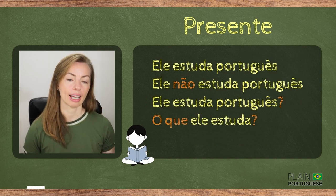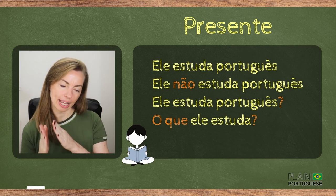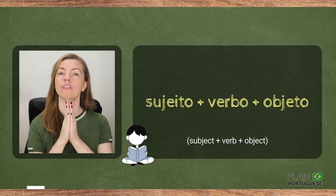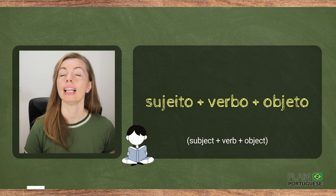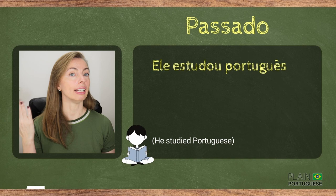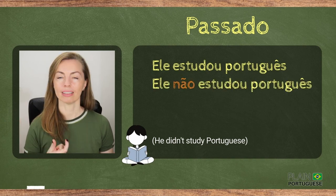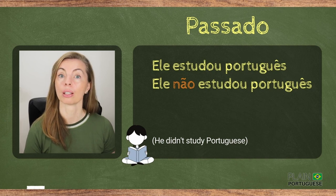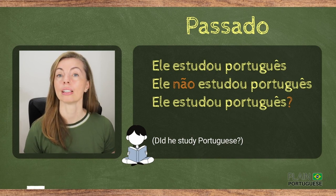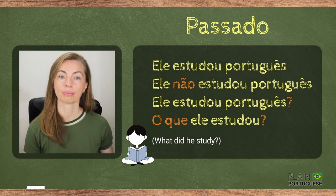The examples we've just seen are in the present tense. But regardless of the verb tense, you will use the same sentence order in Portuguese: subject, verb, object. Let's see an example in the past — affirmative: Ele estudou o português. Negative: Ele não estudou o português. Question: Ele estudou o português? Direct question: O que ele estudou?